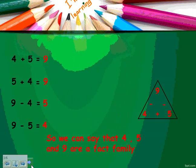Four plus five equals nine, and five plus four equals nine — the order doesn't matter in addition. But the order is very important in subtraction: nine minus four equals five, but it is not equal to four minus nine.